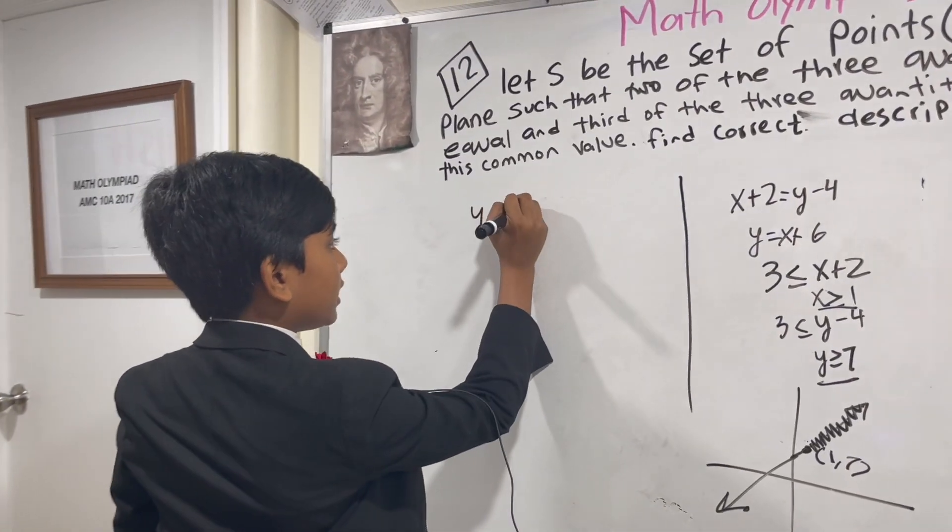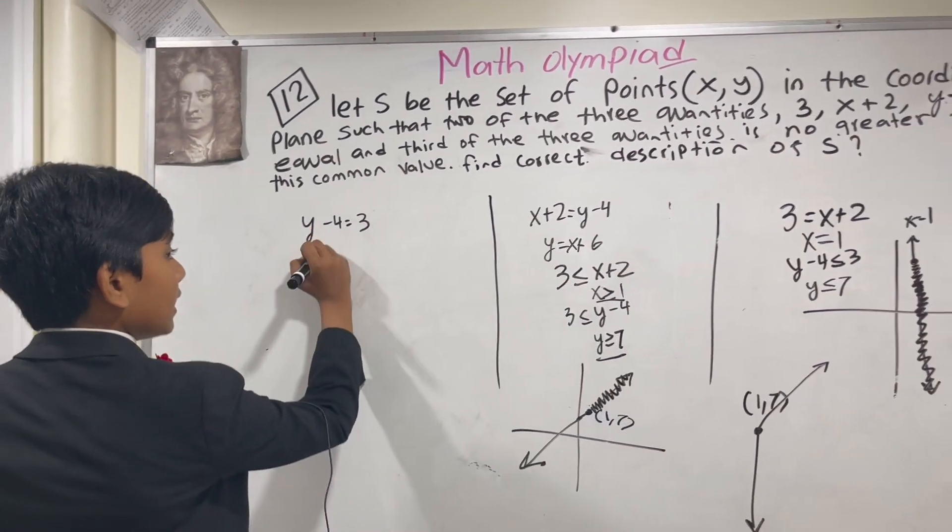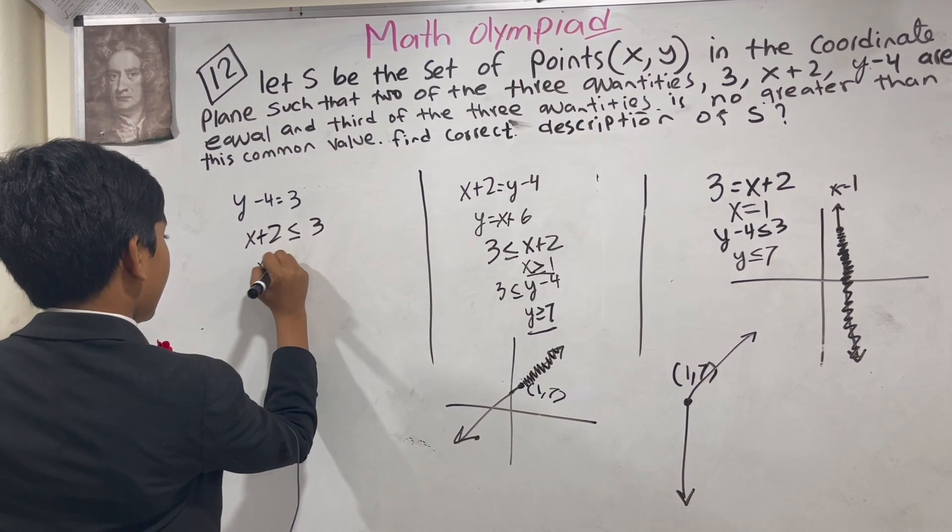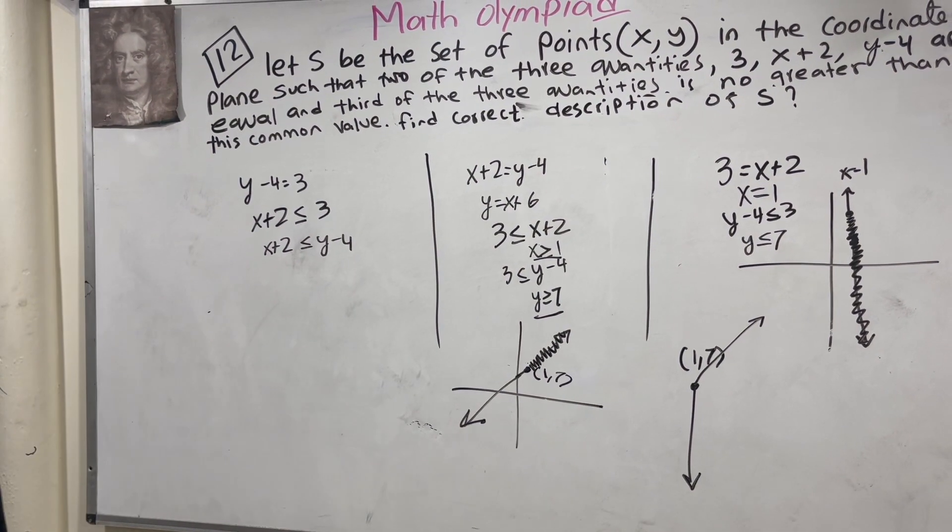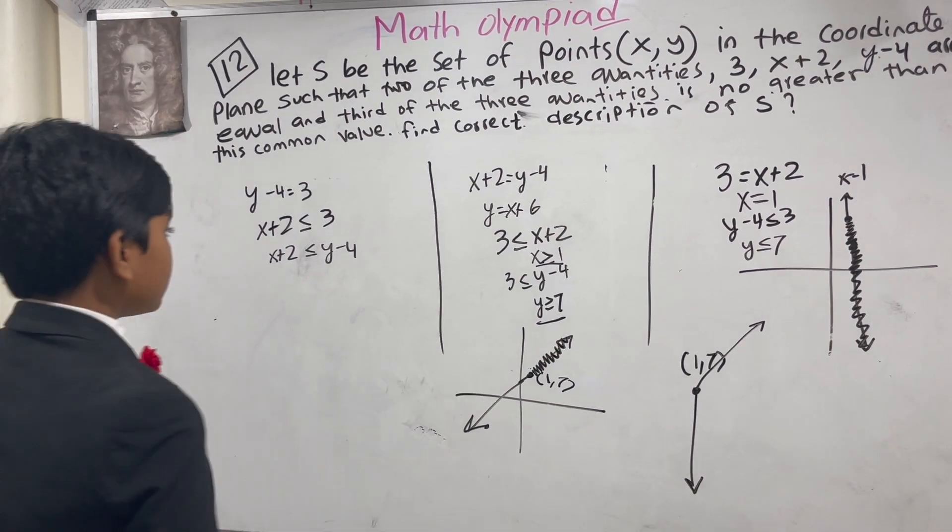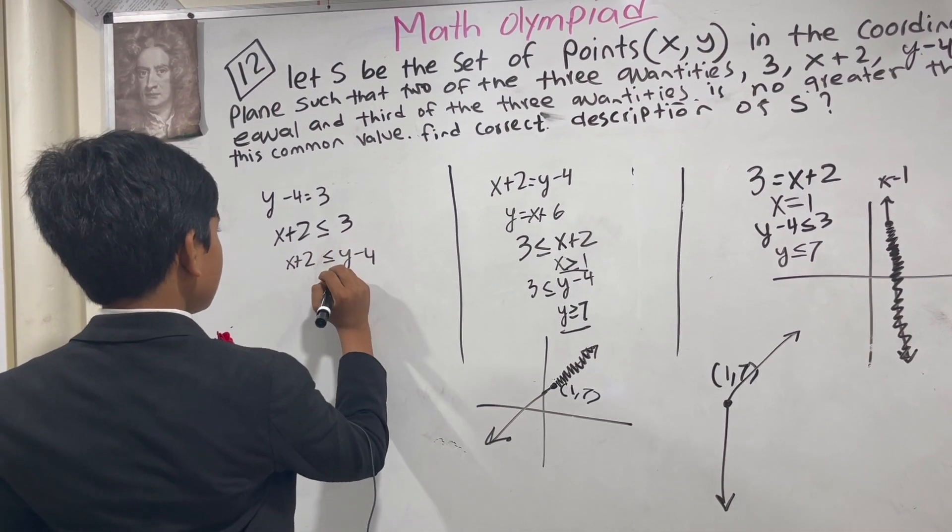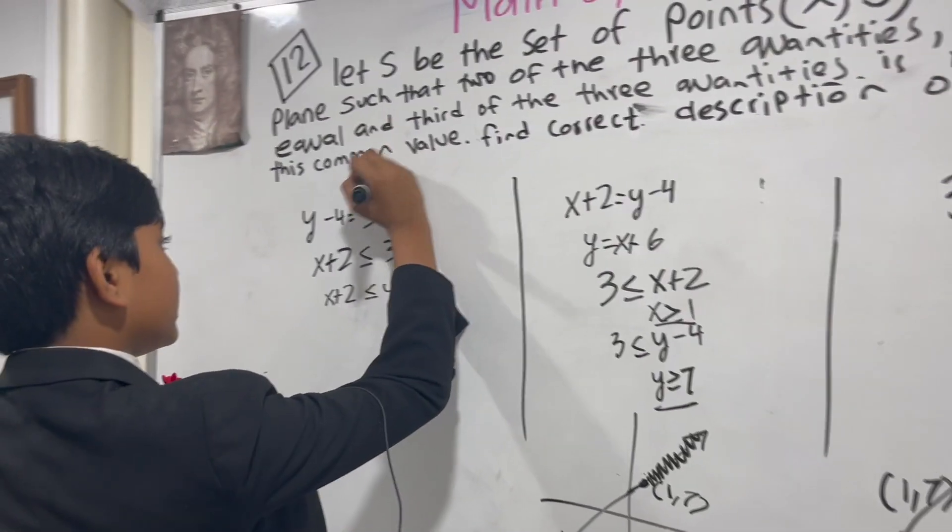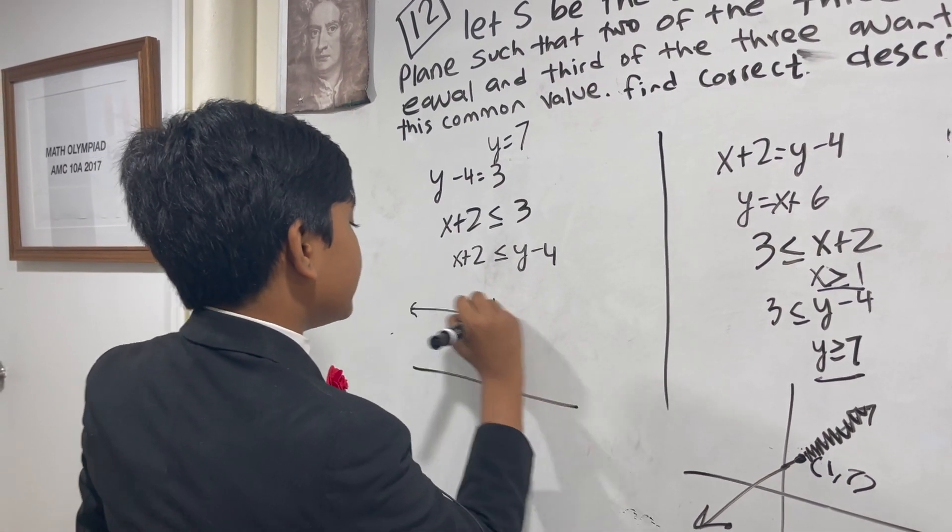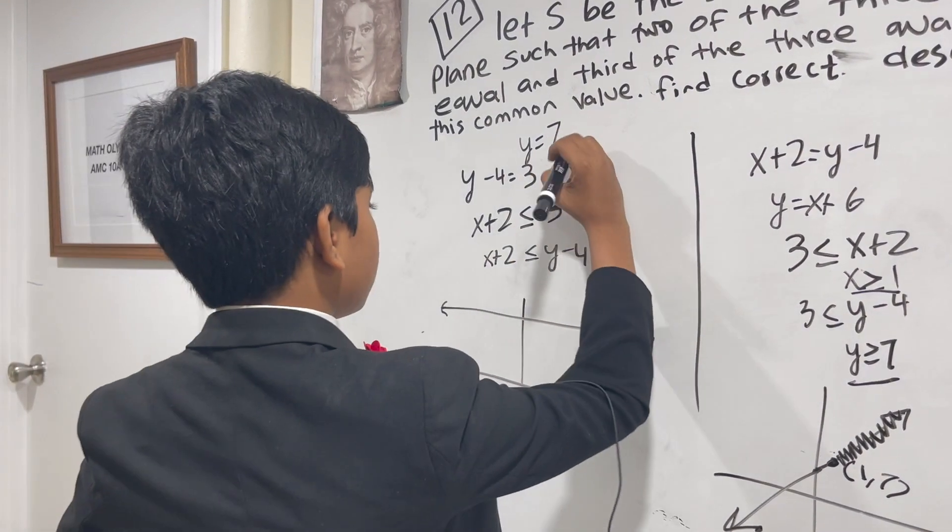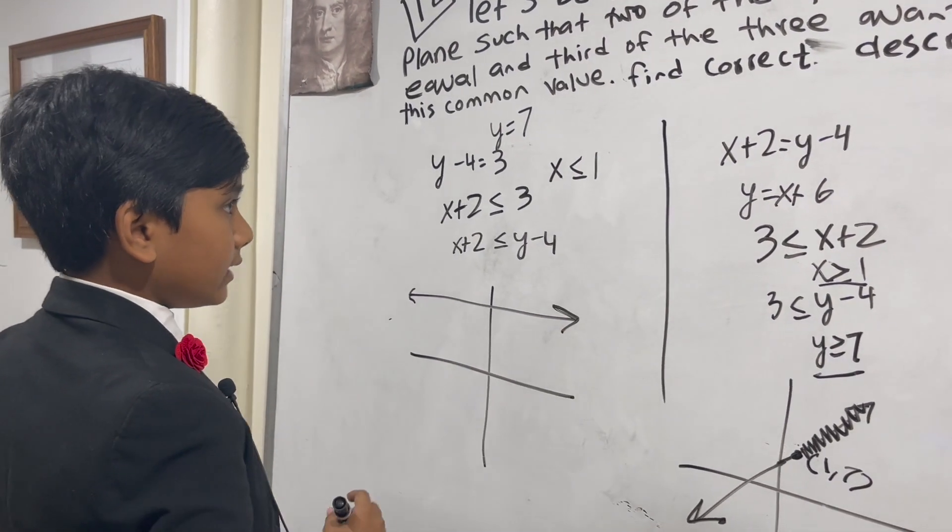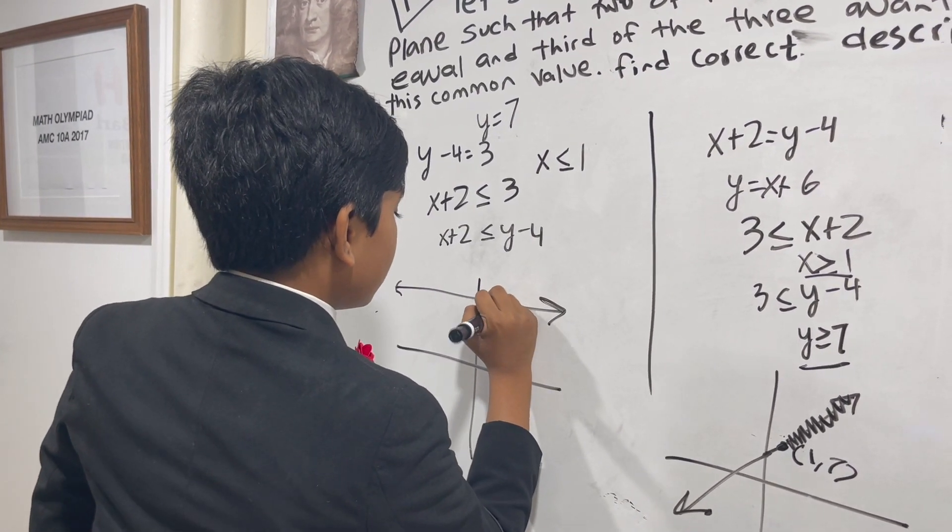And finally, y minus 4 equals 3. That means that x plus 2 is less than or equal to 3, and is less than or equal to y minus 4. So for this one, we know that this is simply the graph y equals 7, which is something like this. x plus 2 is less than or equal to 3, which means the region S is where x is less than or equal to 1, and that would be here.